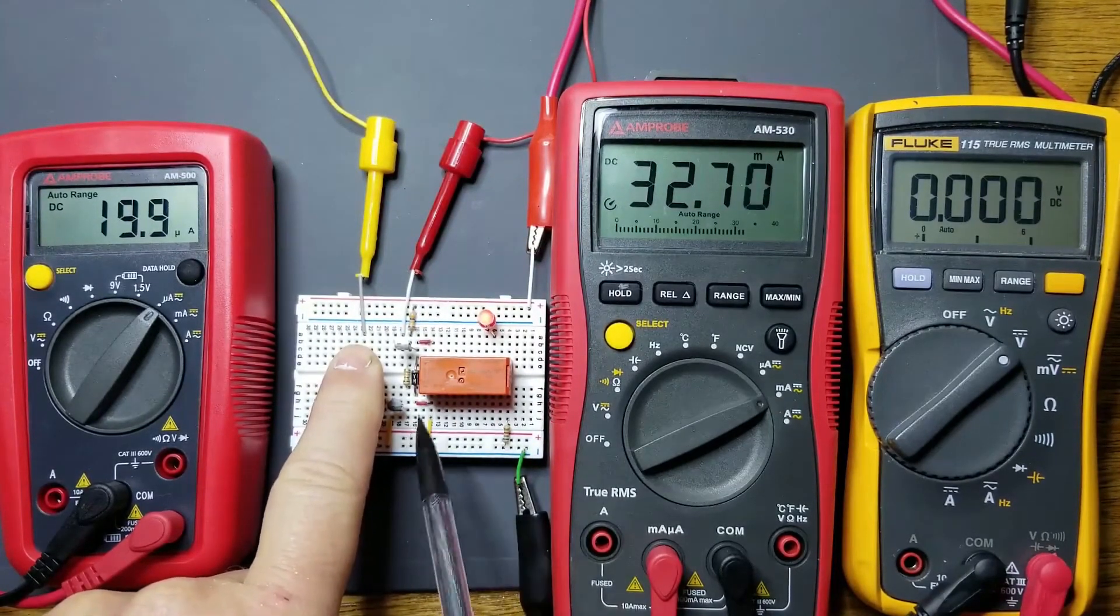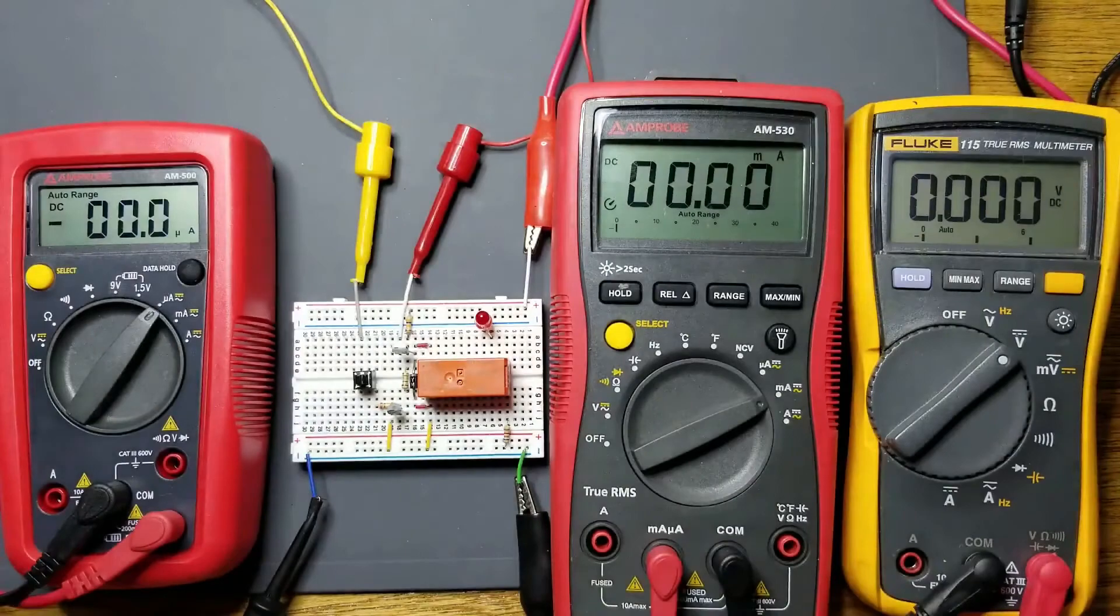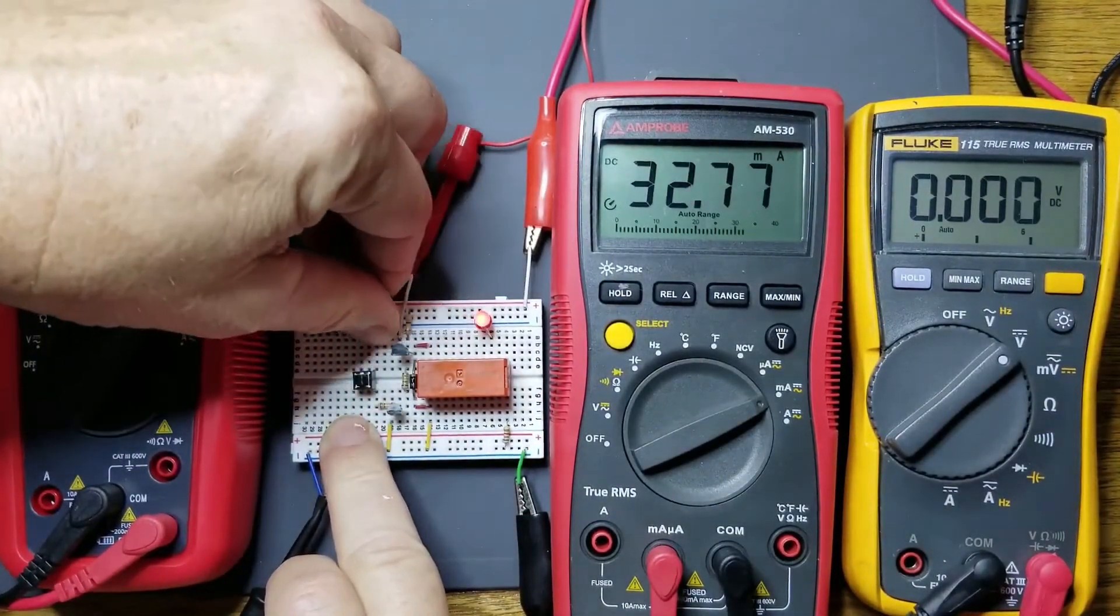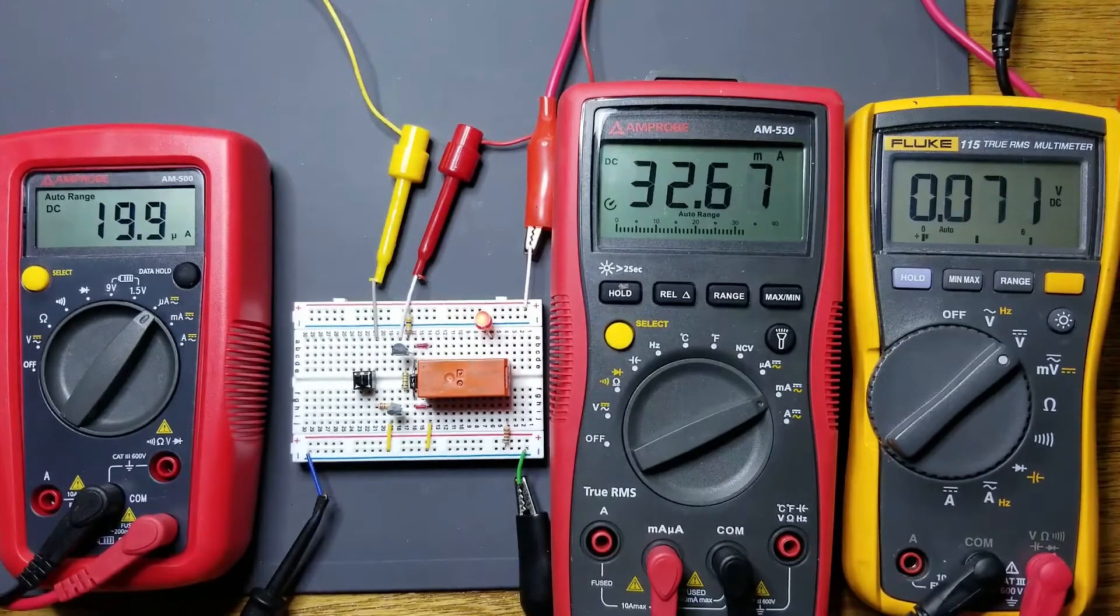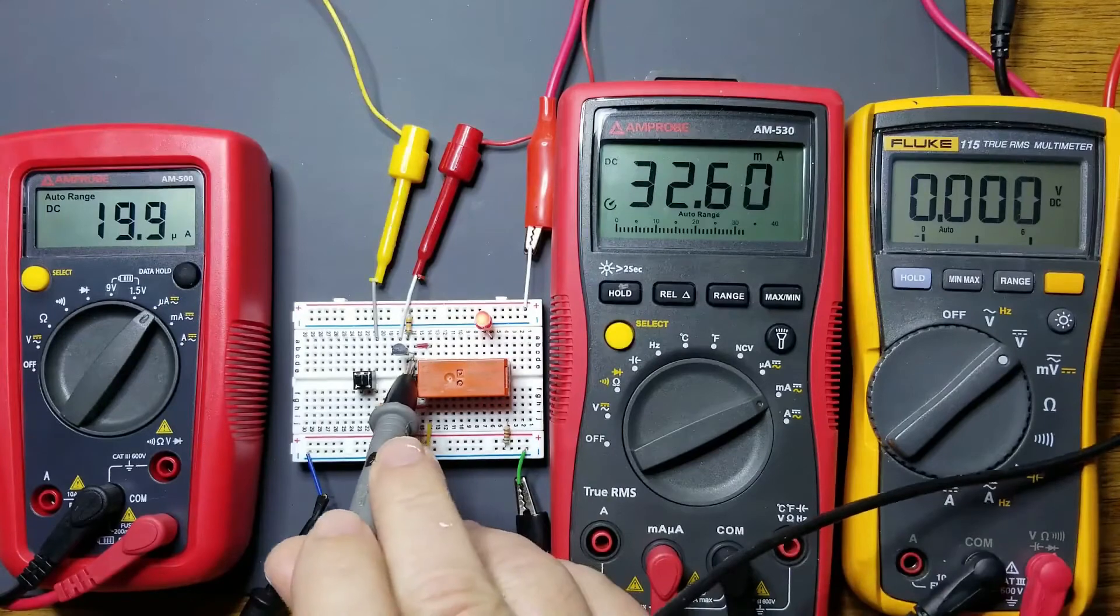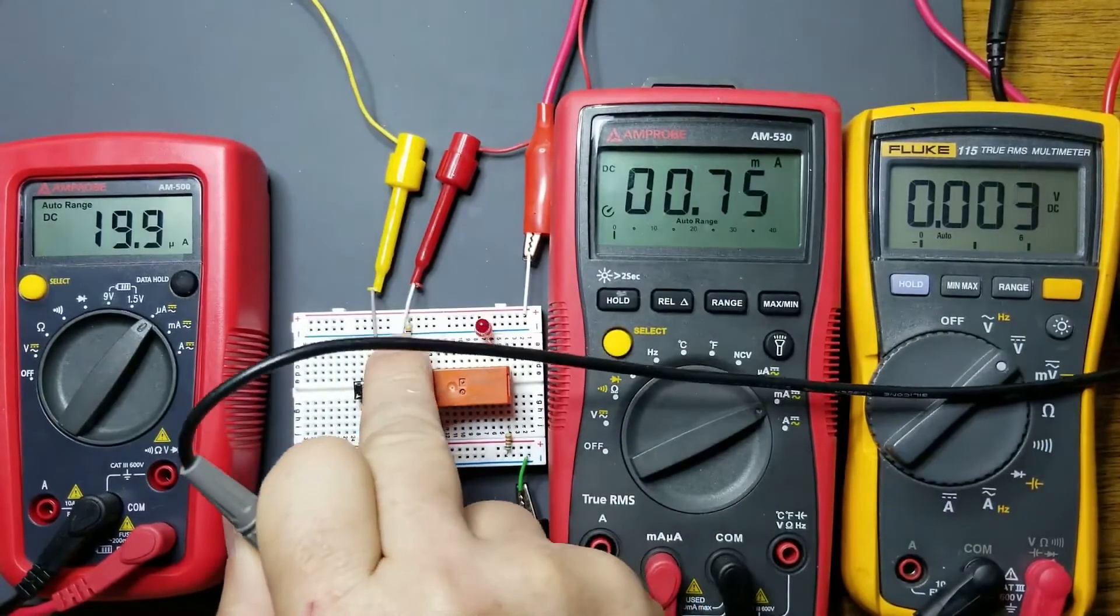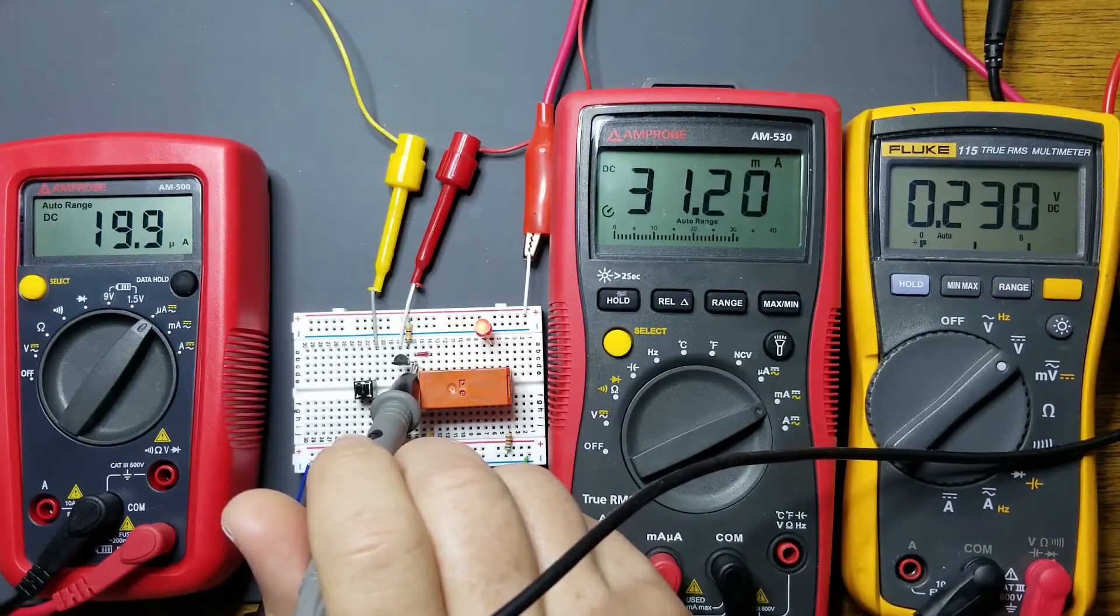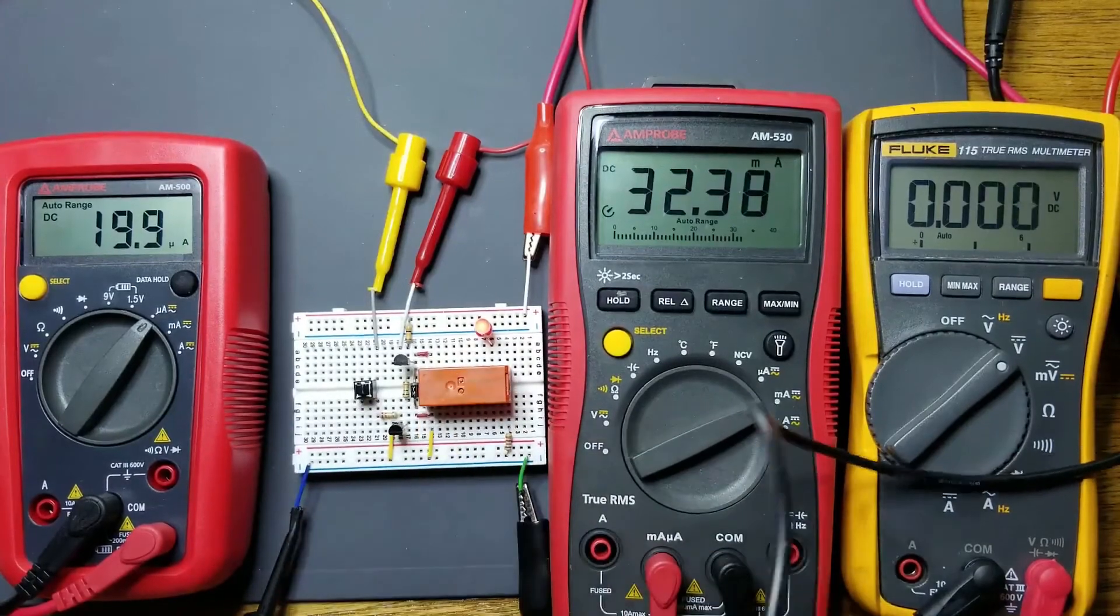The voltage across this driver transistor right here should be pretty close to zero volts because it's in saturation. I'm just going to go ahead and bypass this switch so we can leave it on. I'm going to check the voltage across this. You can see this is well into saturation because this transistor only has 0.2 volts across it, which is what we want.